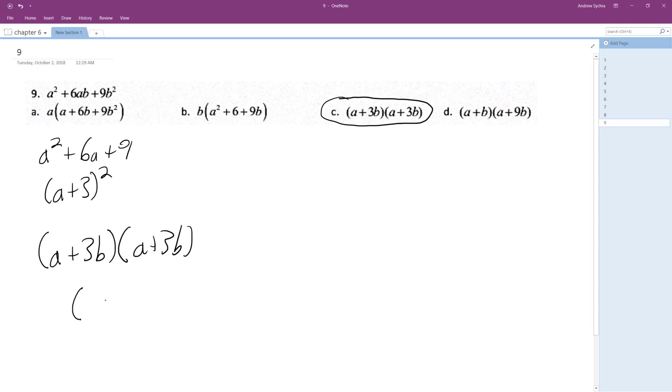And if we multiply this out we get a times a, a² plus 3ab plus 3ab plus 3b times 3b which is 9b². So we get a² + 6ab + 9b² which is correct.